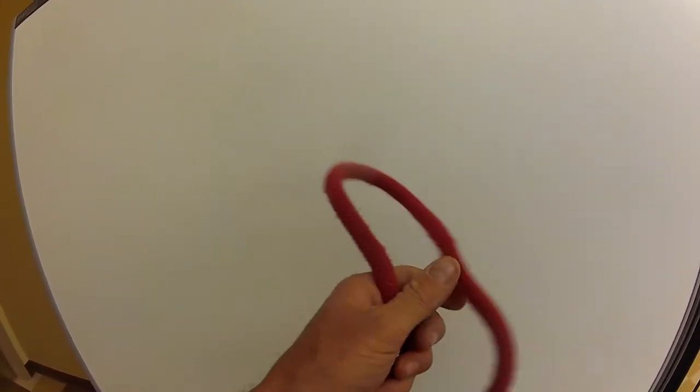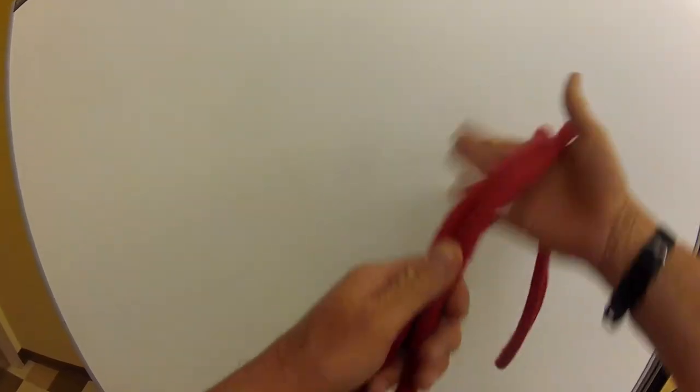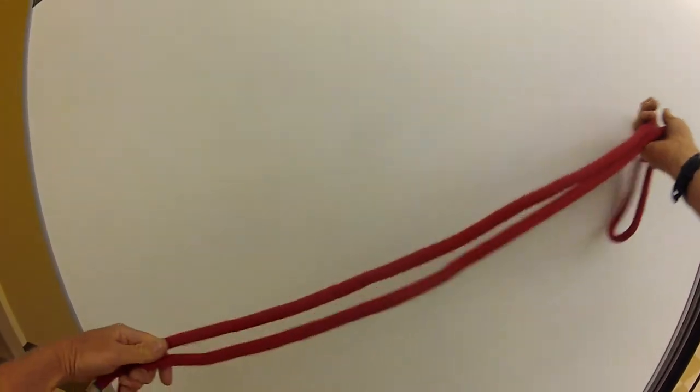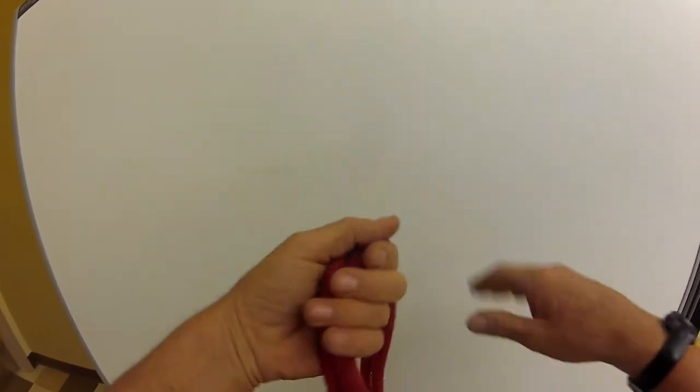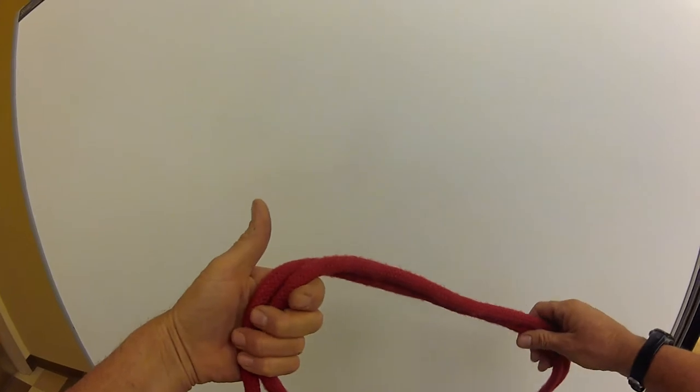This is the double loop figure eight. First thing I want to do, since this is a short rope, is fold it in half. I'll tie this right-handed.